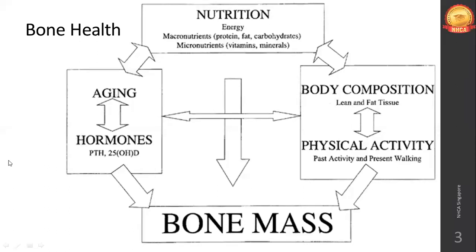Certain deficiencies lead to bone-related disorders, on page 419, table 23.1. In case of vitamin D deficiency in kids, you will see rickets; in adults, you will see osteomalacia and idiopathic hypercalcemia. Idiopathic is a medical terminology used when the reason is unknown or not yet understood.